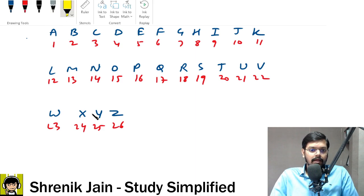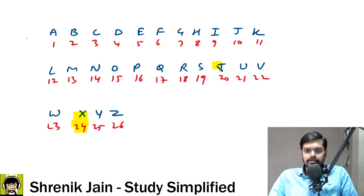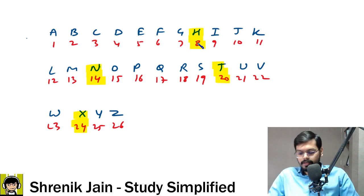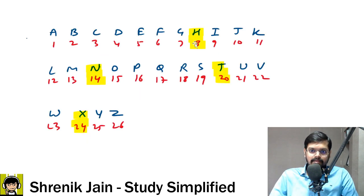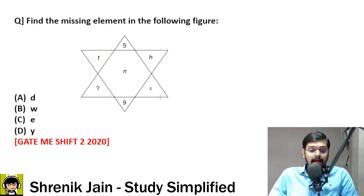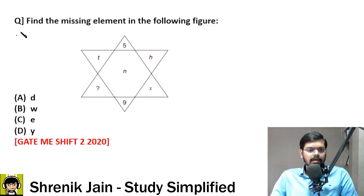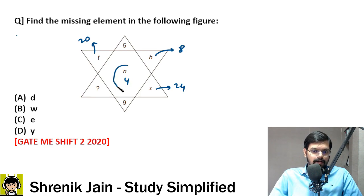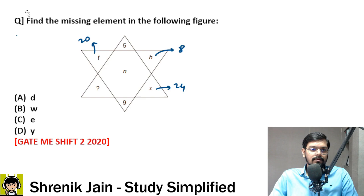So we have H, N, X, T — H, N, X, T. Now, H has the value 8, T has the value 20, N has the value 14, and X has the value 24. Check it out — X is 24. So H is 8, T is 20, X is 24, and N is 14. Wait — N is 14, not 4. My bad, it was not 4, it was 14.